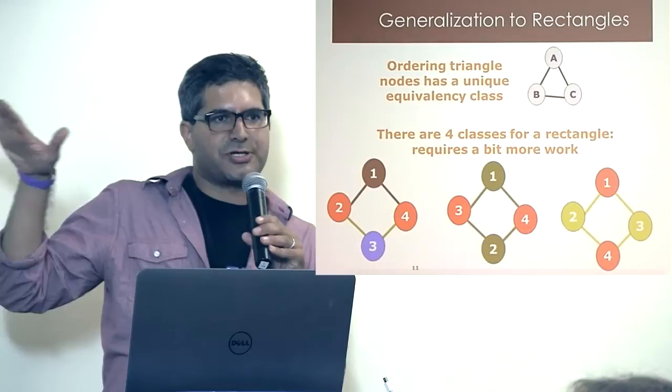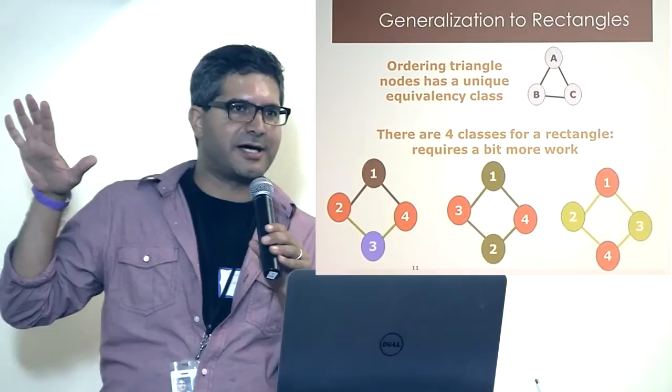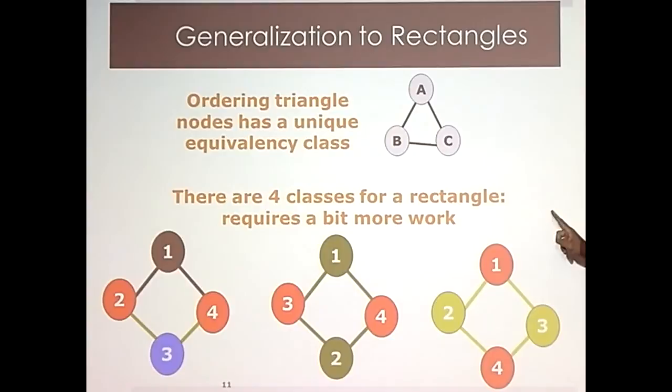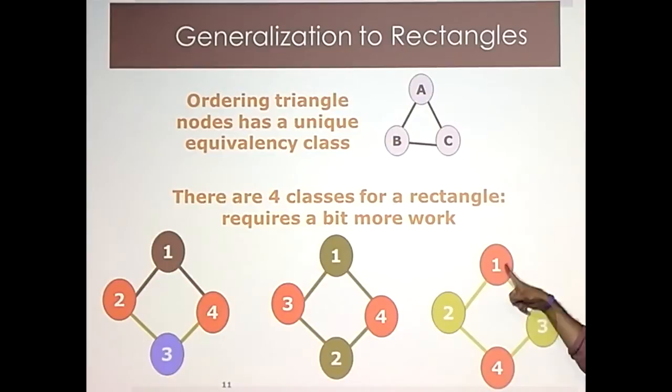For a triangle, there's only one ordering — within rotation and flipping, there's only one way to order nodes in a triangle: the smallest, the next smallest, the largest. But for a rectangle, there are actually three equivalency classes for how you would traverse it from the smallest node. Nonetheless, you can write it out and do a pretty good job for a rectangle as well.